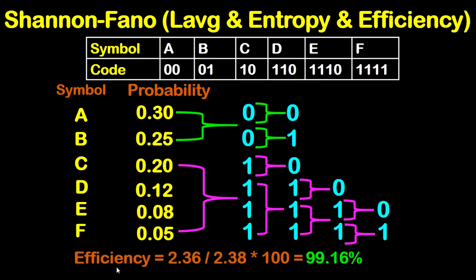Now to get the efficiency, this will be equal to the entropy divided by the L average, and this result will be multiplied by 100. So in this case, this will give 99.16%. So this is the efficiency.